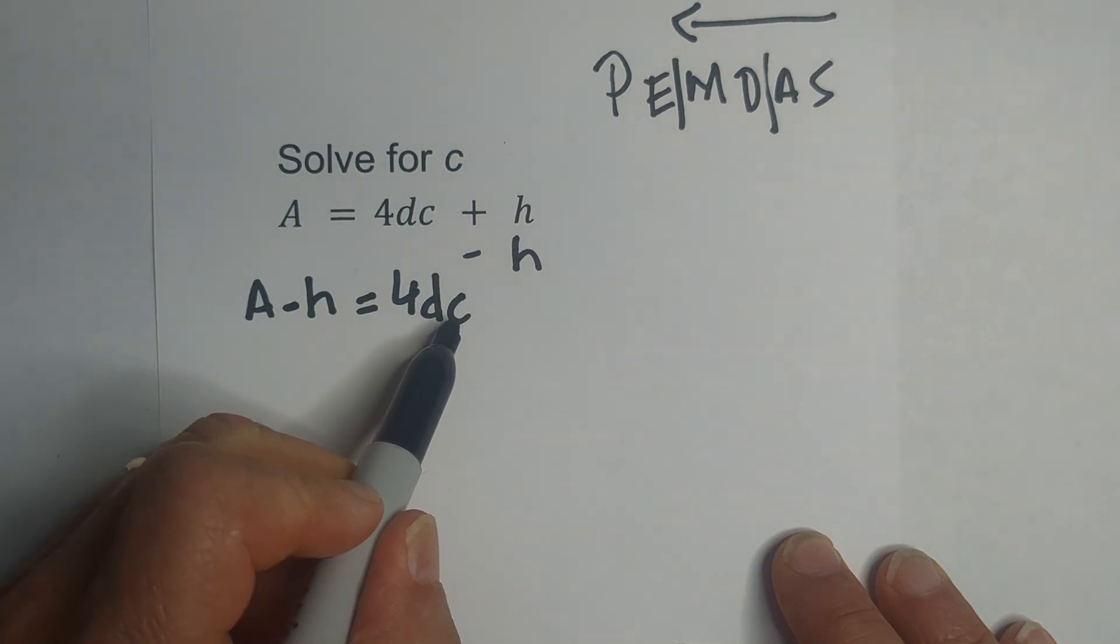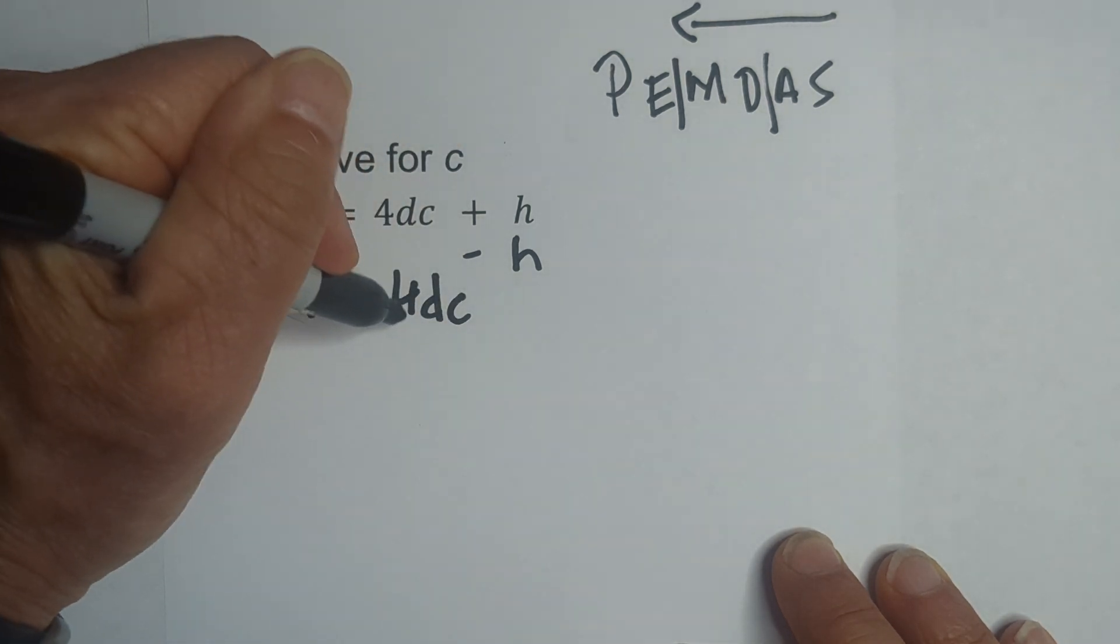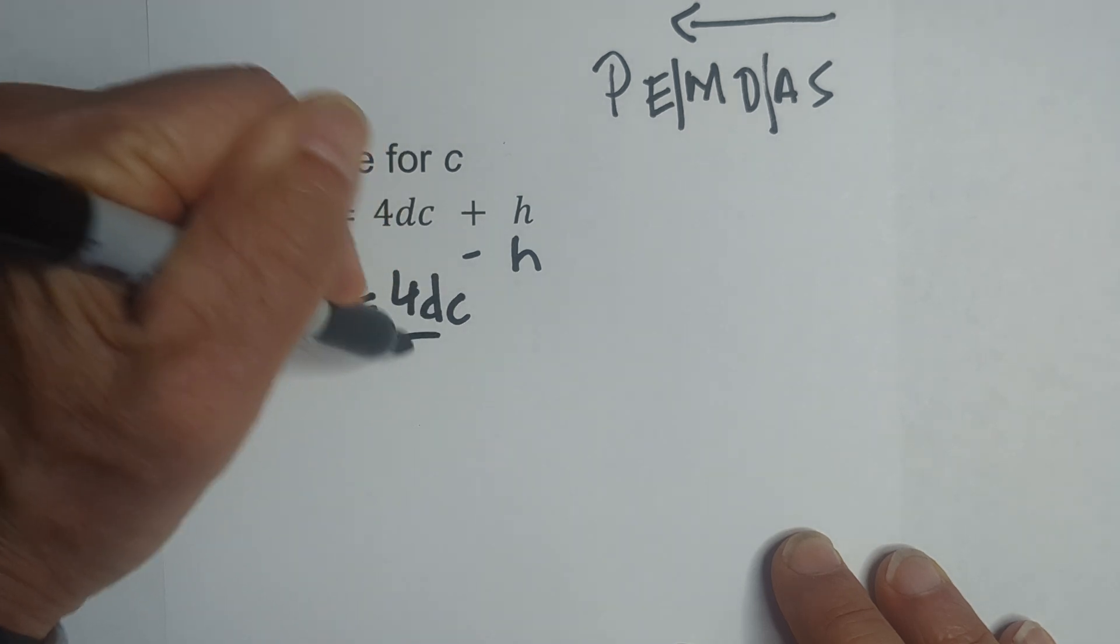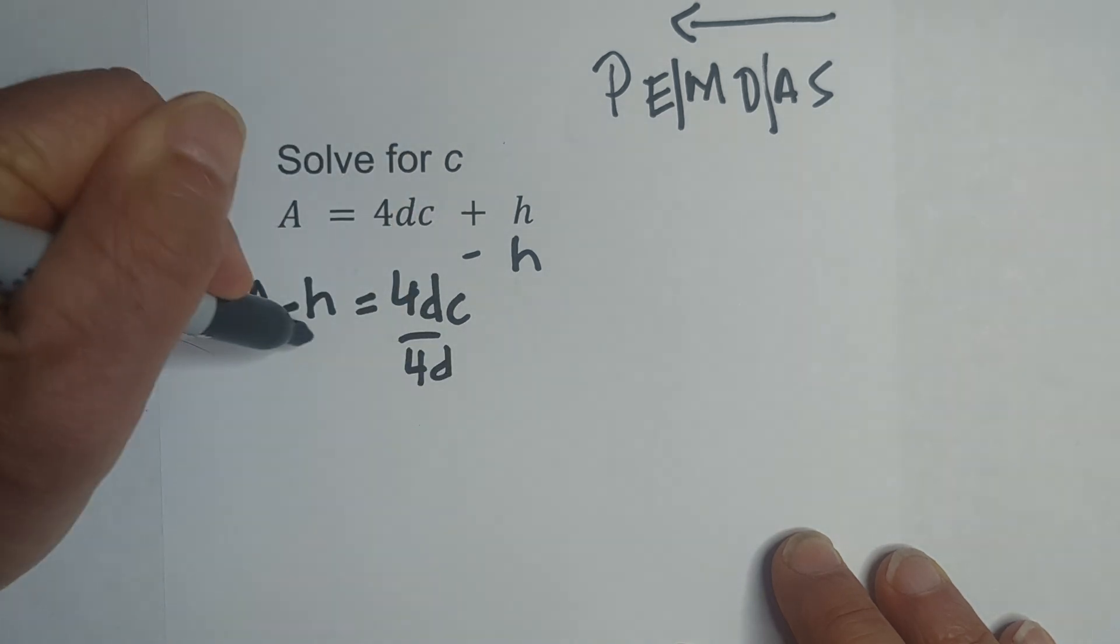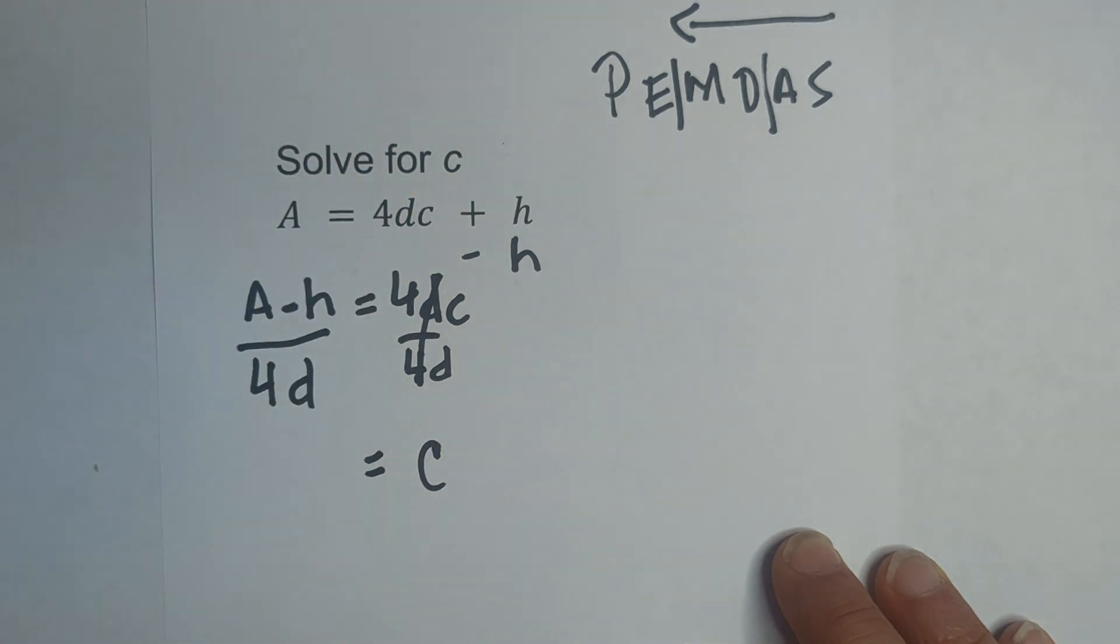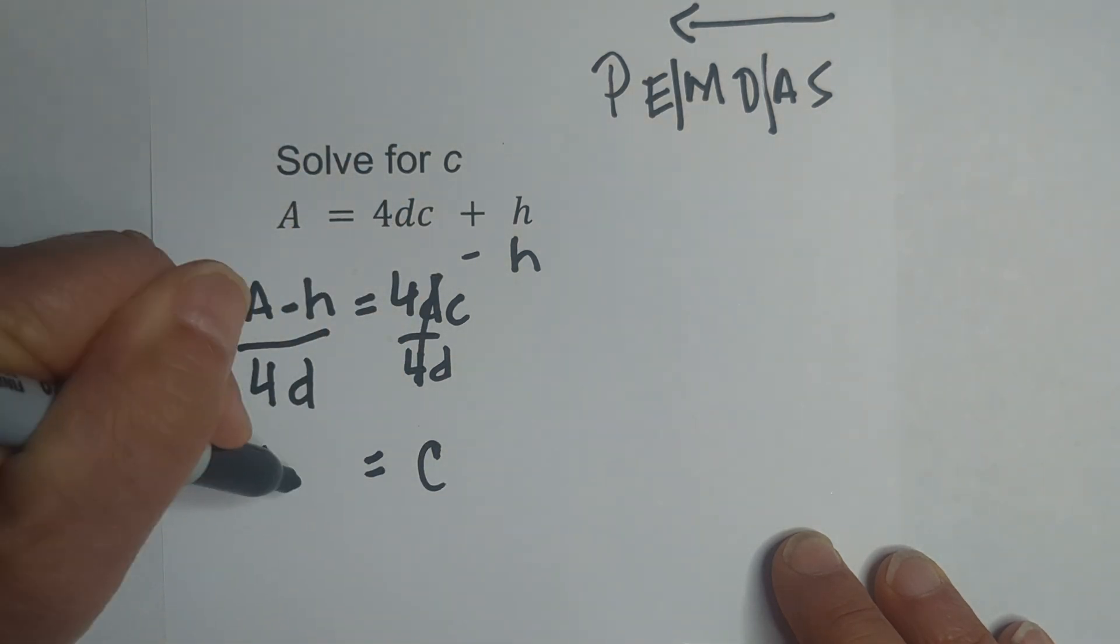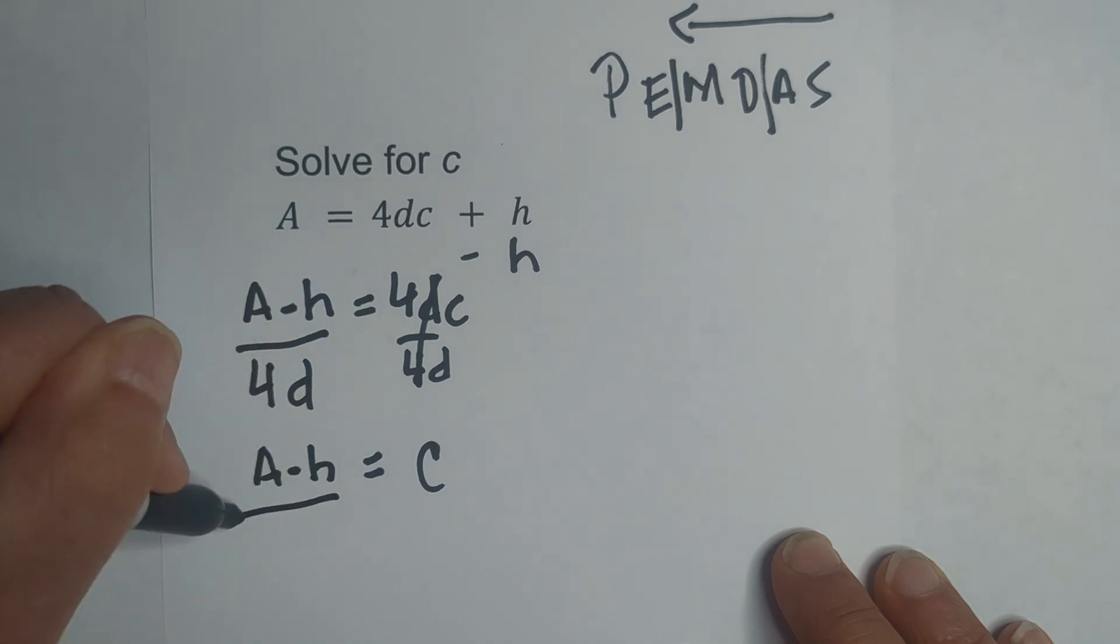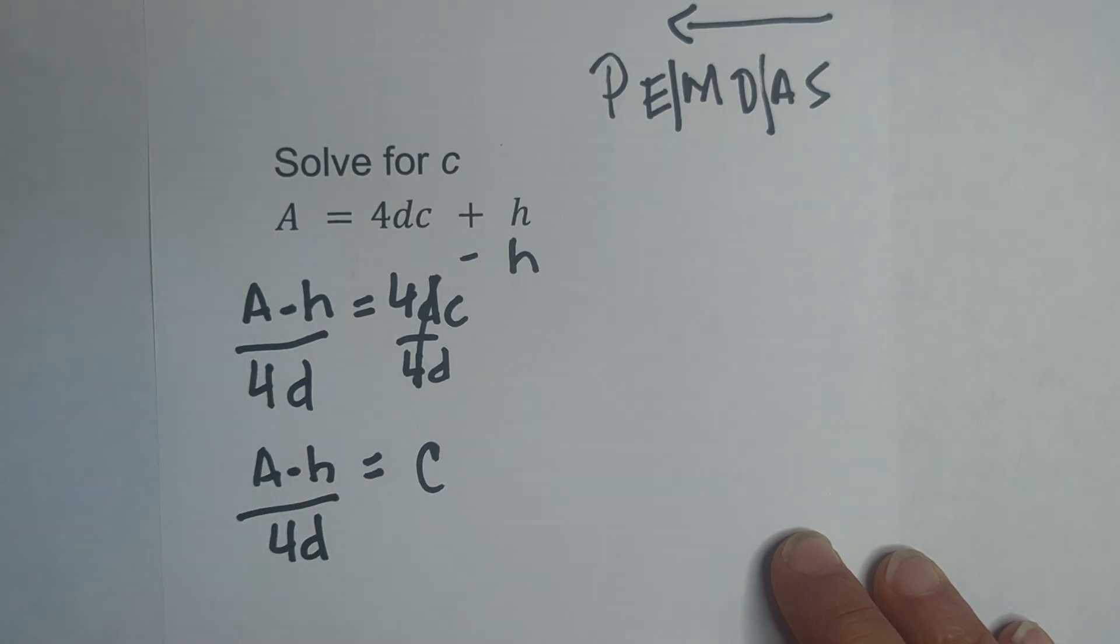Now, remember, we're solving for C, so this is multiplication, we're just going to divide through by 4D. These cancel, and we're left with C equals A minus H over 4 times D.